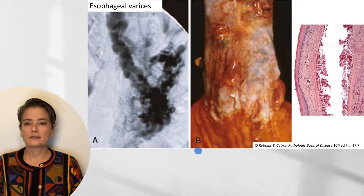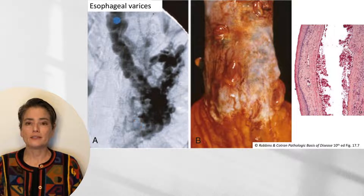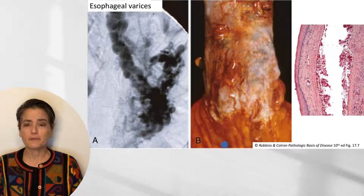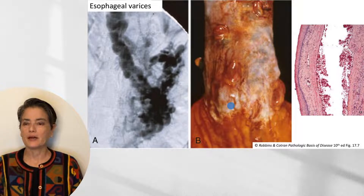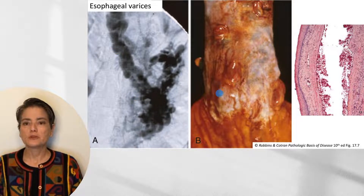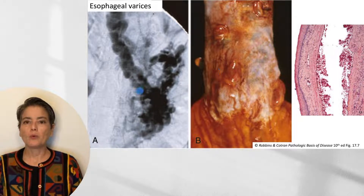This shows esophageal varices: an angiogram demonstrating dilated veins, and an autopsy specimen from the same patient. The isolated polypoid lesions visible are because this individual underwent ligation banding to prevent blood flow, resolving most of the varices. Microscopically, dilated vessels are seen beneath the squamous mucosa. You can appreciate why, with this amount of blood and protrusion, a tear here can lead to rapid exsanguination.